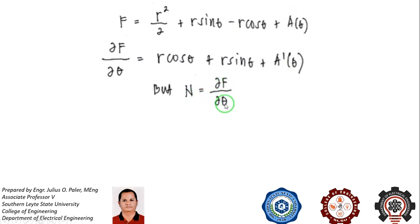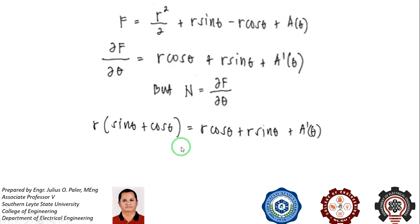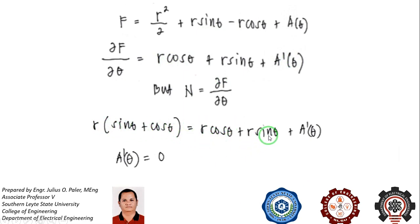Since the partial derivative of f with respect to θ must equal the N term, we equate r(sinθ + cosθ) to r·cosθ + r·sinθ + a′(θ). Distributing gives r·sinθ + r·cosθ on both sides, which cancel, leaving a′(θ) = 0.